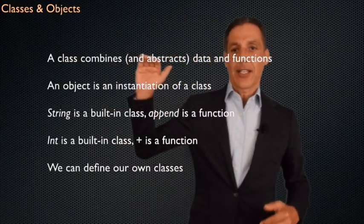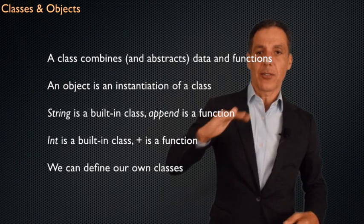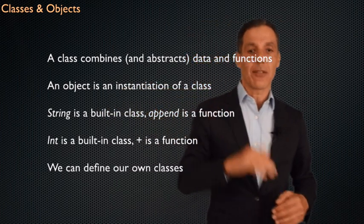So think about the class as a definition of something and an object as an instantiation of it. It's an actual thing that we now get to manipulate. And I'll be using these terms throughout the next few weeks. I just want to make sure that we understand the distinction between a class, which is a definition, and an object, which is a thing that we've actually created that we can now act on. Now, as I said, a class combines and abstracts data and functions. An object is an instantiation of that class.